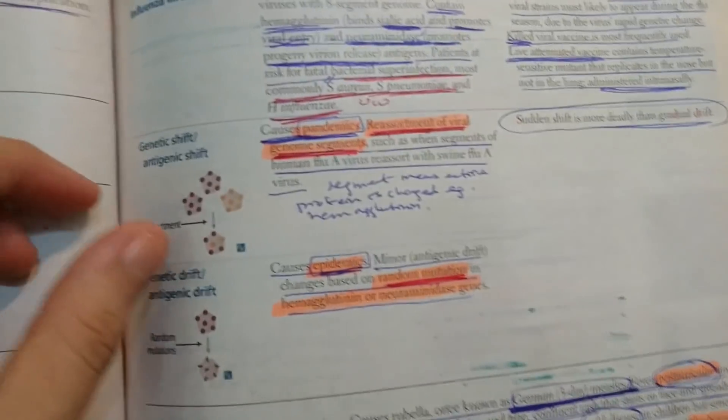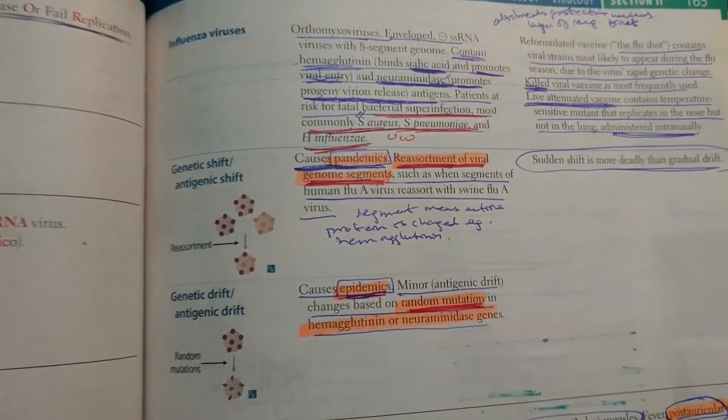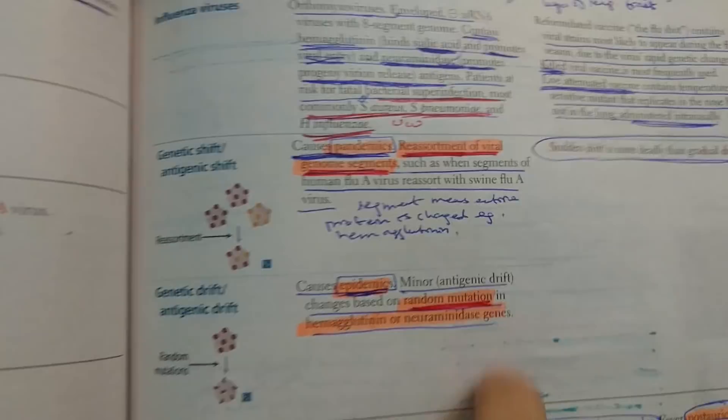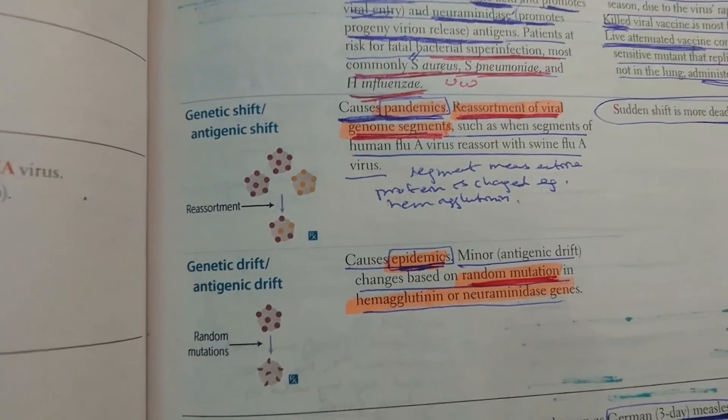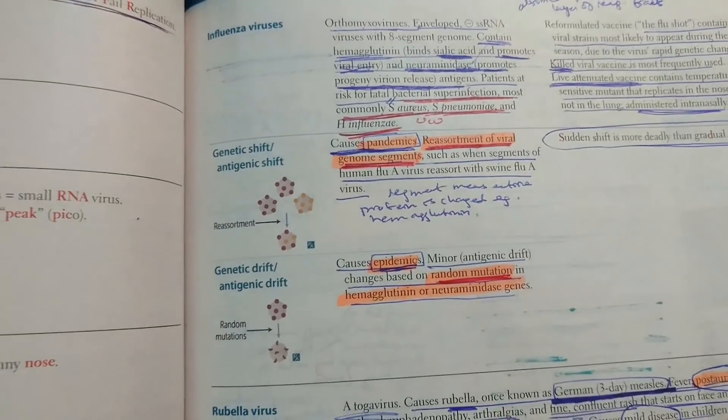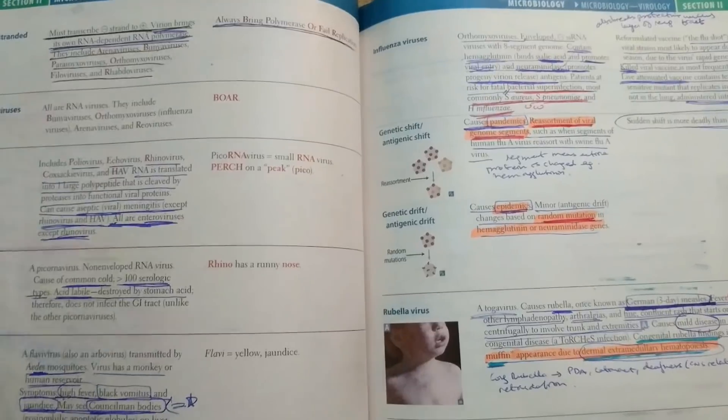One more thing that I did was for example if I would find some lines in First Aid that I had also read in UWorld, I would just write UW there which would mean that I read this in UWorld, and I also did this for NBMEs and UWSA. I would specifically mention where I read that particular thing.